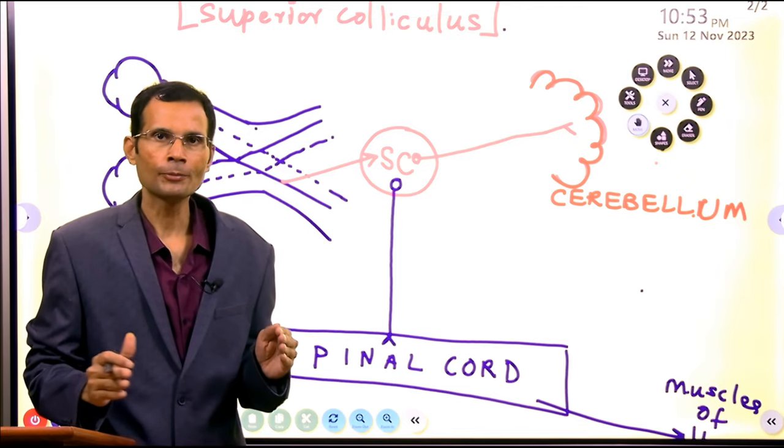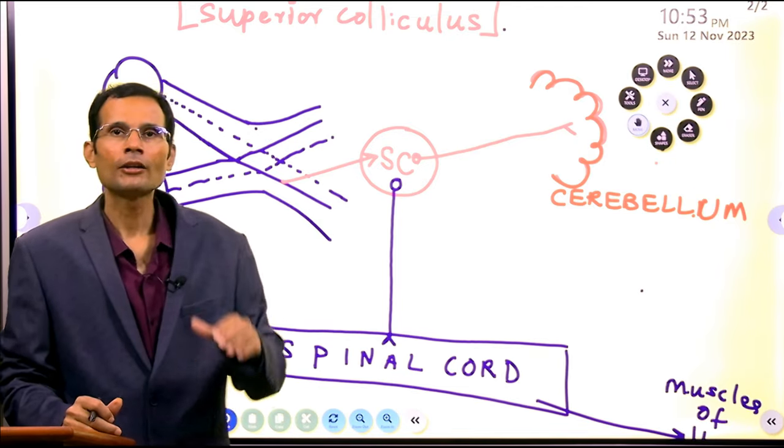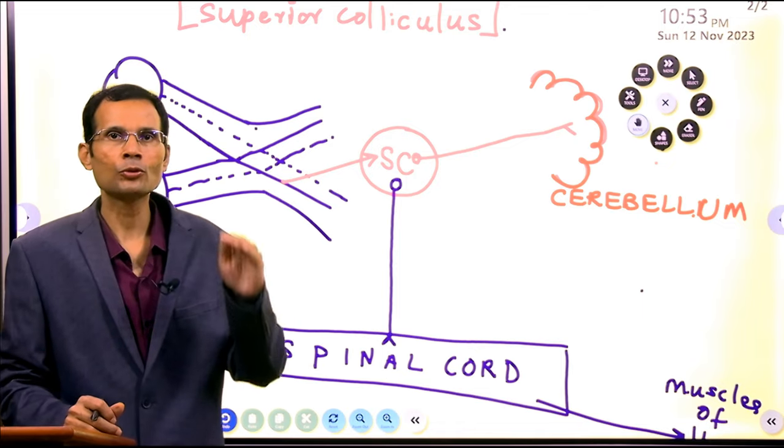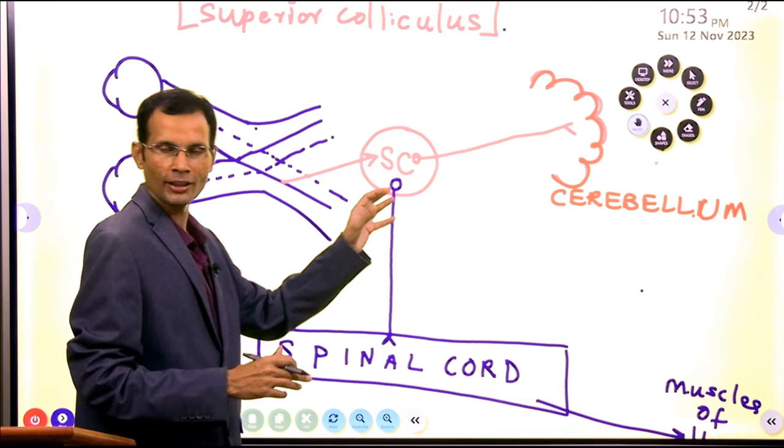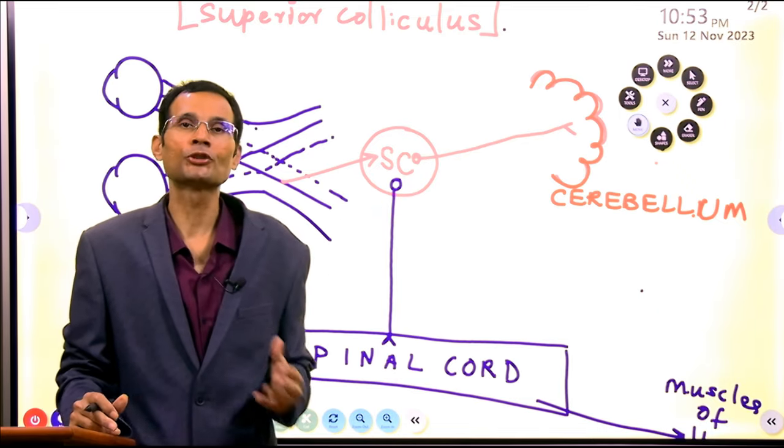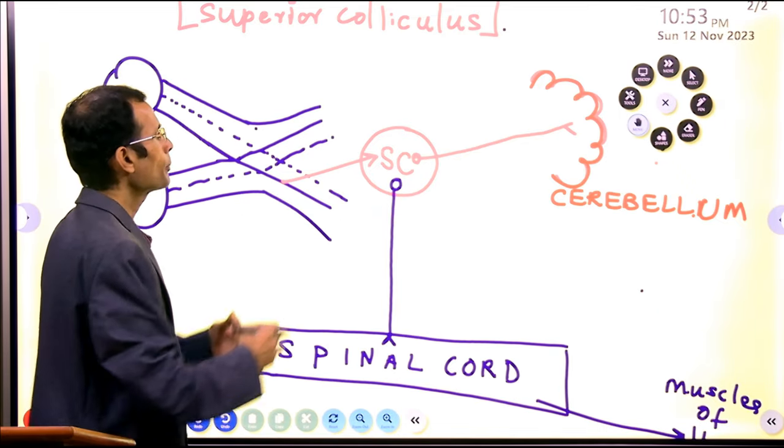Now, this structure, basically roof of the midbrain is called as tectum. Tectum has two superior colliculi and two inferior colliculi. So superior colliculus connected with the visual pathway, part of the tectum.